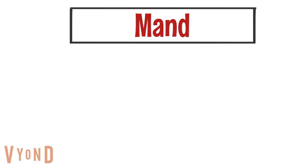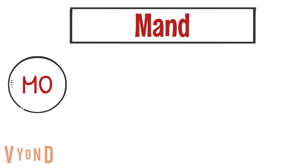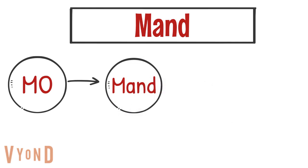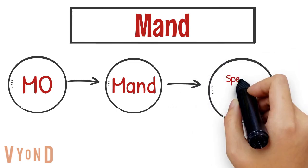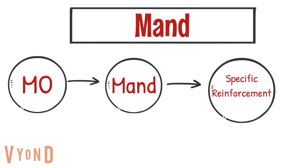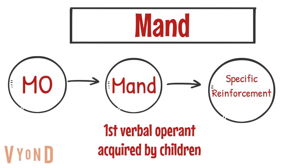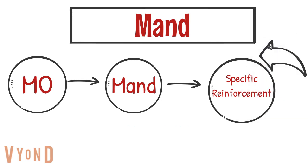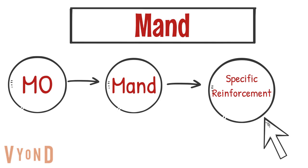The mand is a type of verbal operant in which a speaker asks for what they want or need. The mand starts with a motivating operation, the speaker requests the item they want or need, and then the speaker is given specific reinforcement by the listener. Mands are the first verbal operants acquired by a human child. Skinner points out that the mand is the only verbal operant that directly benefits the speaker — it gets the speaker reinforcers such as edibles, toys, attention, or the removal of an aversive stimulus. Mands often become strong forms of verbal behavior because of this specific reinforcement, which satisfies an immediate deprivation condition or removes an aversive stimulus.